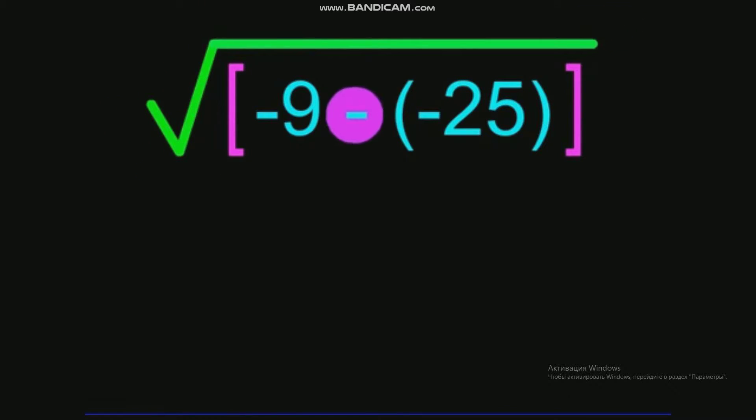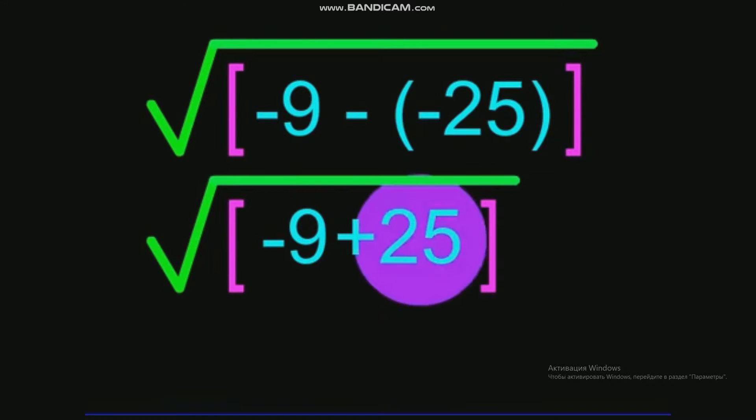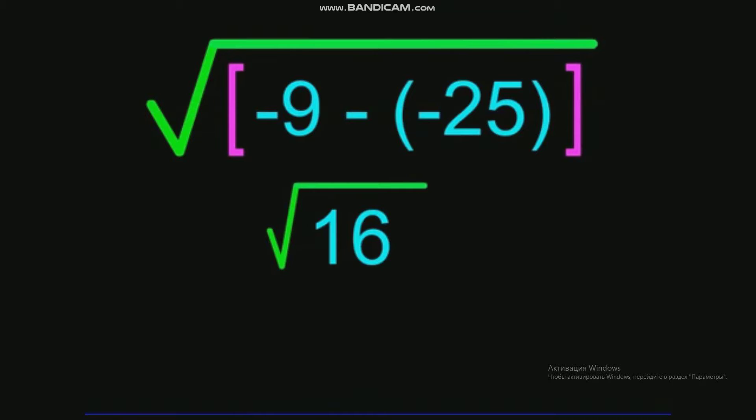Once again, we have two negatives, and we know that equals a positive. So we are looking at negative 9 plus 25. 25 minus 9 equals 16. We are now left with the square root of 16.